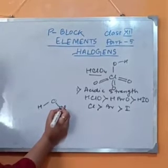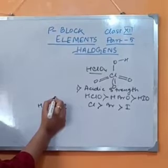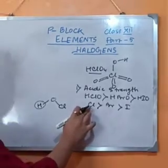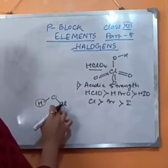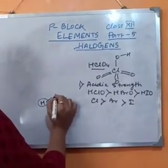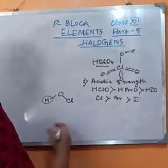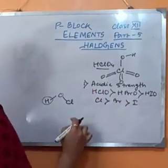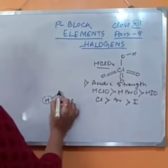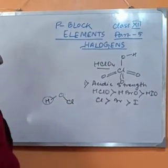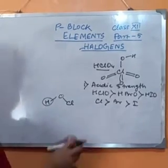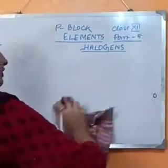In HClO, chlorine's electronegativity is more than that of bromine, which is more than that of iodine. So chlorine will easily attract the electrons from the oxygen. If the electronegativity of chlorine is more, it will easily pull the electron cloud from oxygen; as a result H⁺ will be easily ionized. Since chlorine's electronegativity is more than bromine's, it will easily delocalize the electron cloud over oxygen, so H⁺ will be easily ionized. The acid strength is greatest for HClO and least for HIO, because the electronegativity of iodine is least and it cannot delocalize the electron cloud over oxygen as easily as chlorine. This acid strength of oxoacids is a very important portion.